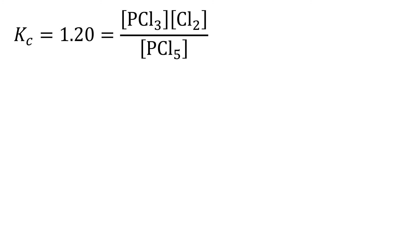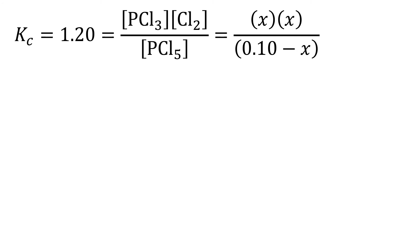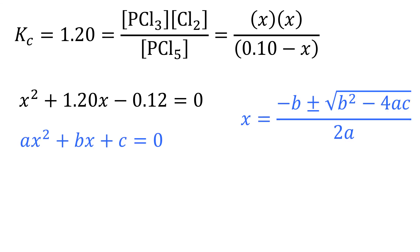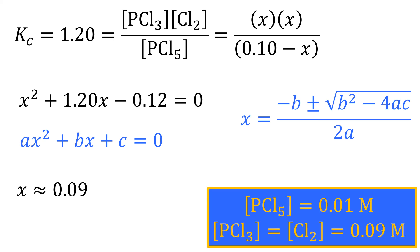When the values are plugged into the equilibrium constant expression, it is found that simply taking the square root of both sides is not possible as a quadratic expression is produced, which can be solved using the quadratic equation. When solved this gives two values for x, though the negative value is not chemically meaningful. X then becomes 0.09 and the equilibrium concentrations can be found by plugging the value of x into the equations.